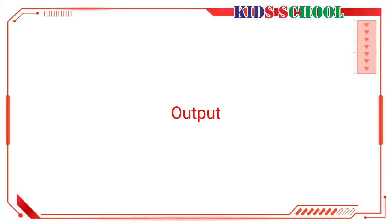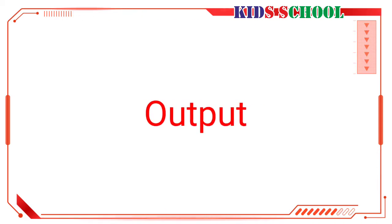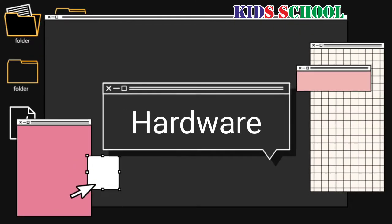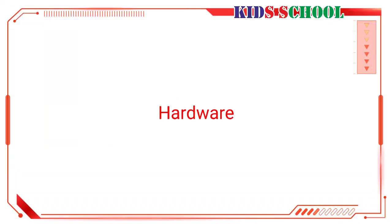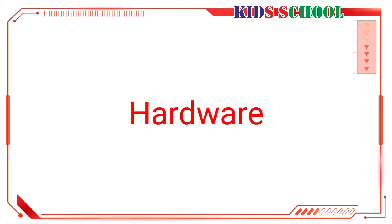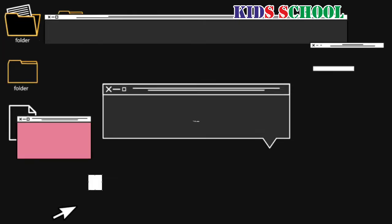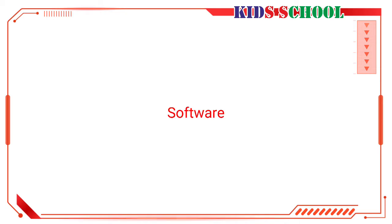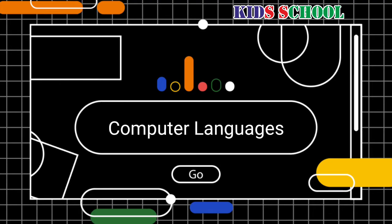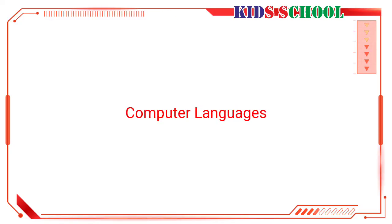The fourth one is output: output is displayed by the monitor or printed by a printer. The fifth one is hardware: all the parts of the computer that you can see and touch are called hardware — the keyboard, monitor, printer, mouse, etc. are all hardware. The last one is software: all the different sets of programs together are called software.